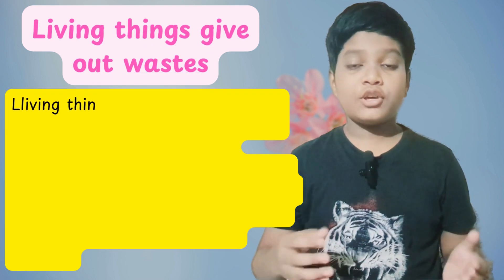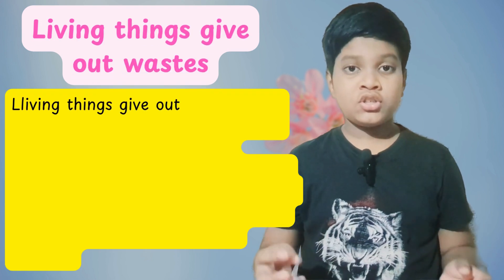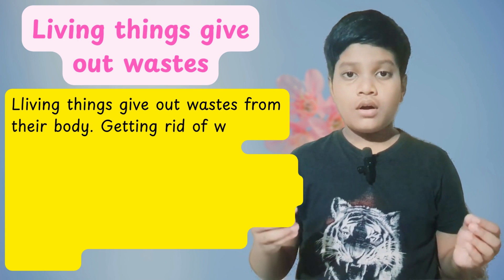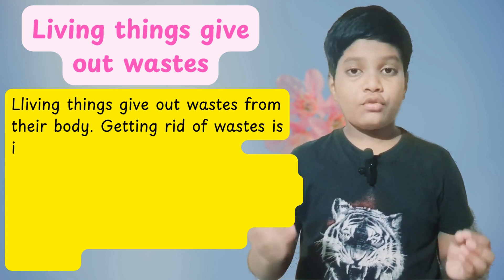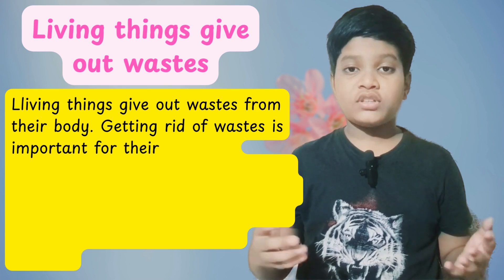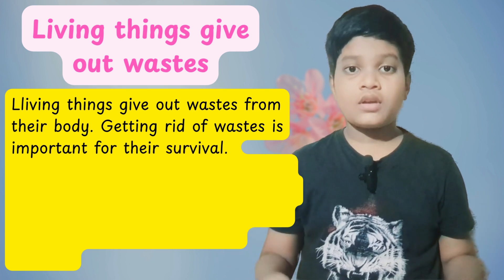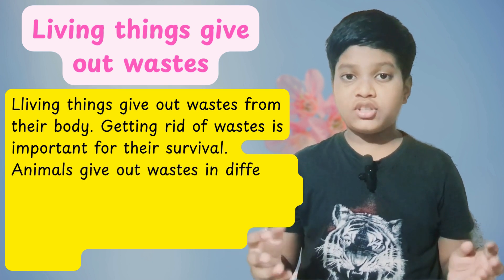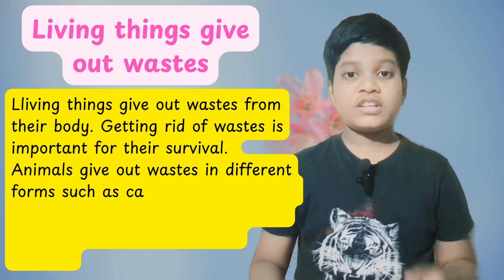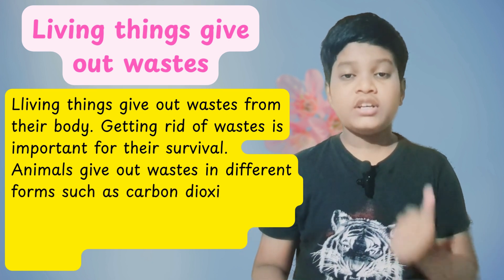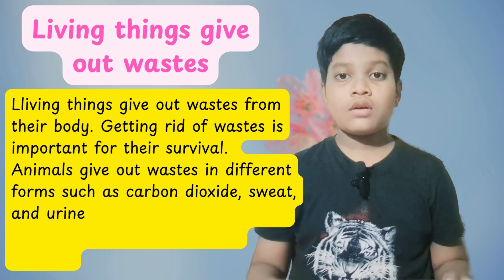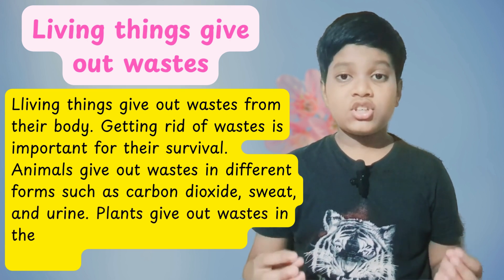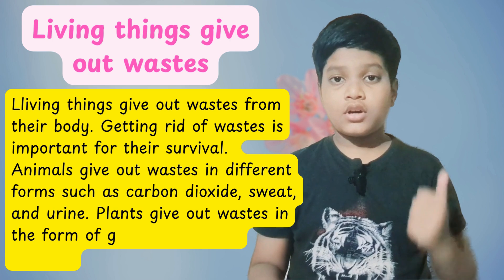Living things give out waste from their bodies. Getting rid of waste is important for their survival. Animals give out waste in different forms such as carbon dioxide, sweat, and urine. Plants give out waste in different forms such as gums, resins, and oxygen.